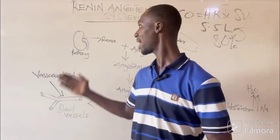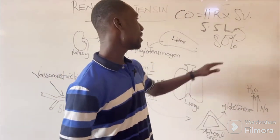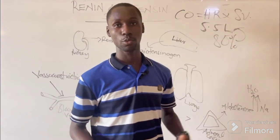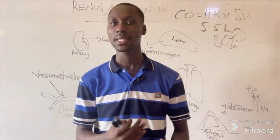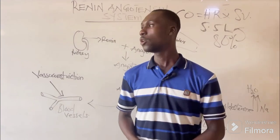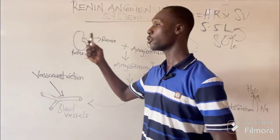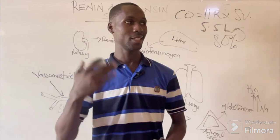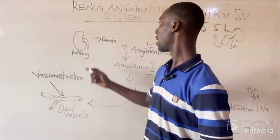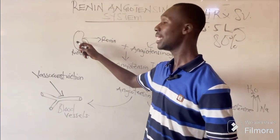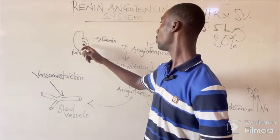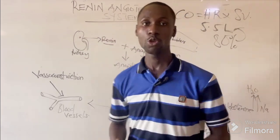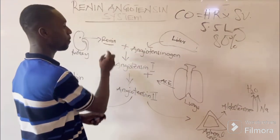Whenever the kidney realizes that 80% of the 5.5 liters of cardiac output coming to the kidney is not up to the normal volume, it would assume the blood volume is low, which would trigger the kidney to release renin.